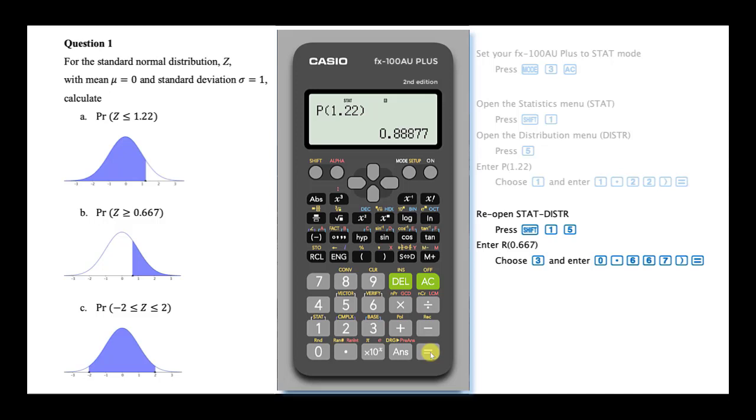Choose an R calculation by pressing 3. Enter the Z value, 0.667. Close the brackets and press equals.